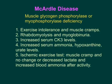McArdle disease is caused by mutation in muscle glycogen phosphorylase, also called myophosphorylase. Patients have exercise intolerance and muscle cramps during brief intense activity or prolonged slower activity. Glycogen is not broken down to glucose-1-phosphate in skeletal muscle, leading to ATP deficiency, which causes rhabdomyolysis. This leads to leakage of myoglobin into the blood and urine, resulting in myoglobinuria and burgundy-colored urine.